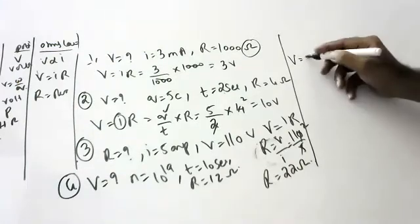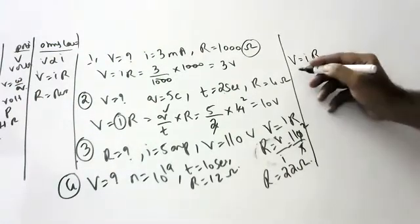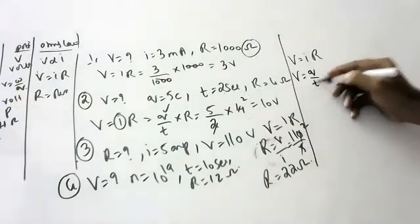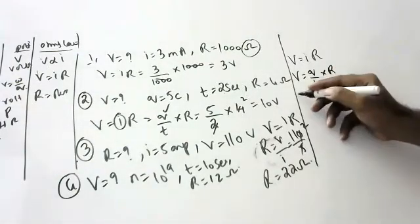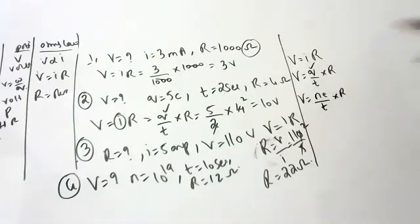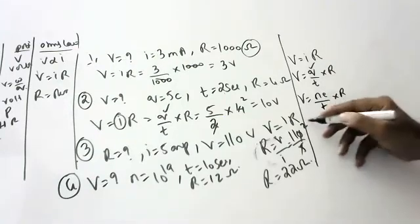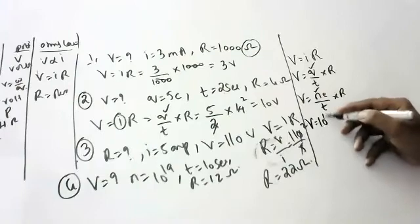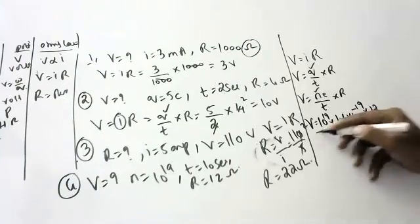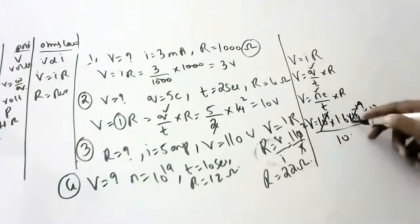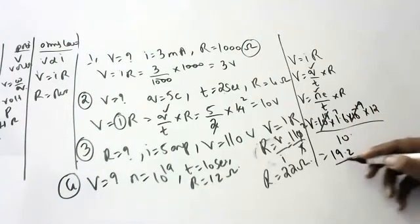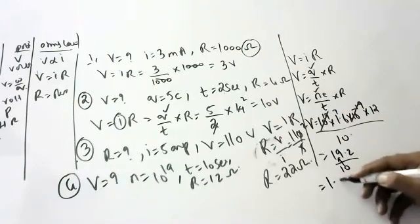V = IR, where I = Q/T. So V = (Q/T) × R. Here Q = N×e = 10¹⁹ × 1.6×10⁻¹⁹ = 1.6. Then V = (1.6/10) × 12 = 1.92 volts.